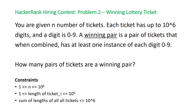The problem states you are given n number of tickets. Each ticket has up to 10 to the 6 digits, and a digit is from 0 to 9. A winning pair is a pair of tickets that when combined has at least one instance of each digit from 0 to 9. The number of tickets is between 1 and a million, the length of each ticket is between 1 and a million, and the total sum of all the lengths of all the tickets is less than a million.